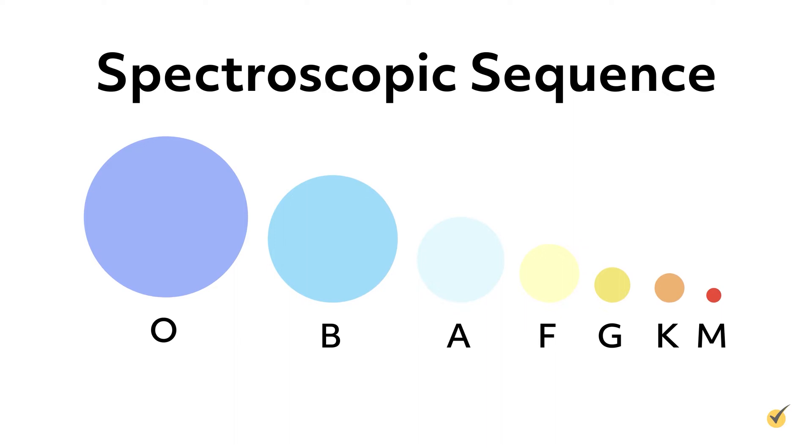O, B, A, F, G, K, and M. This order is called the spectroscopic sequence. Each letter within the spectroscopic sequence is called a star's spectral class. Now, let's explore stars with different spectral classes.